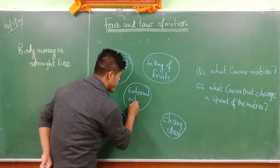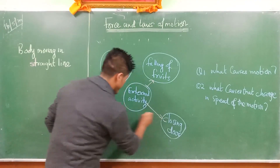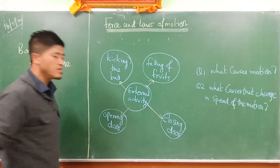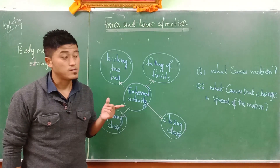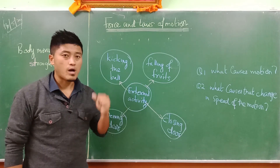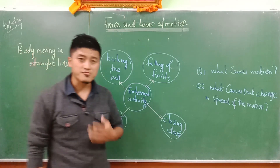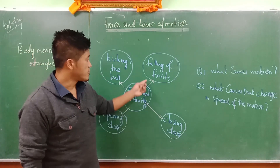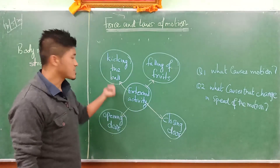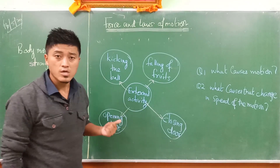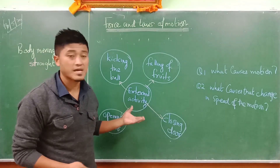These are all external activities. For example, I cannot open the door just by thinking that it should open. In order to open the door I have to do some external thing. In order for fruits to fall from a tree, there should be some external thing happening. In order to kick the ball, you also need some kind of external activity. There was a lot of discussion about what that external activity is.